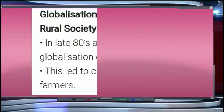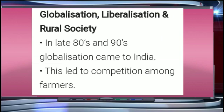We start with globalization, liberalization, and rural society. In the late 80s and 90s, globalization came to India. This led to competition among farmers. The organization in charge for rules and regulations was the WTO, which laid rules regarding prices, wages, taxes, aspects of trade, reduction of barriers, etc. Indian traders are facing competition in fruits, vegetables, clothes, and more.